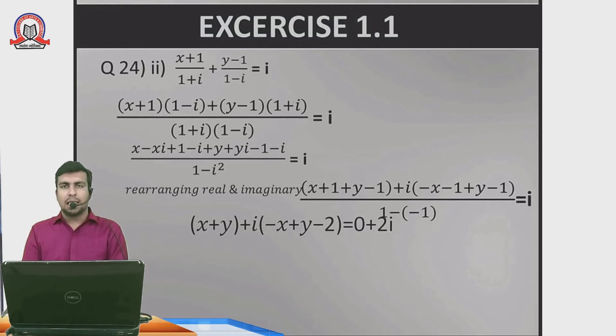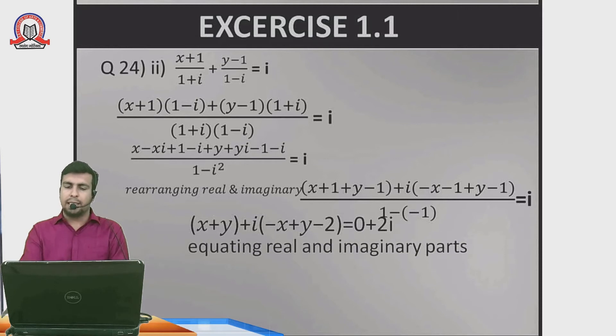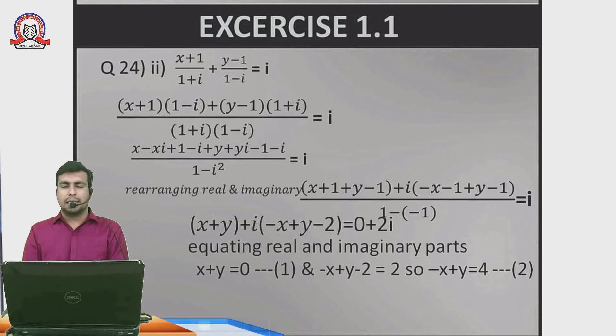Equating real and imaginary parts: x plus y equals 0. And minus x plus y minus 2 equals 2, which gives minus x plus y equals 4. I don't need to multiply anything here, just add the two equations.